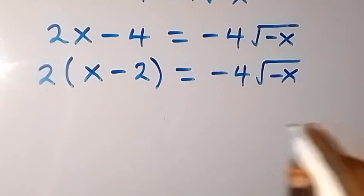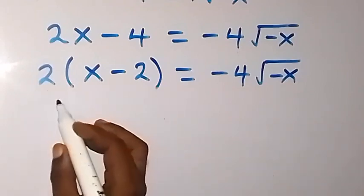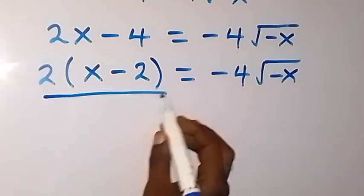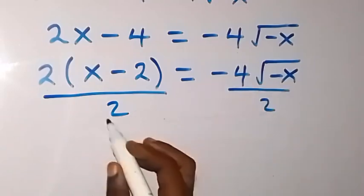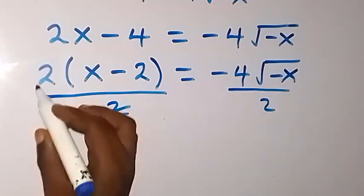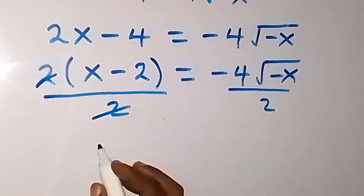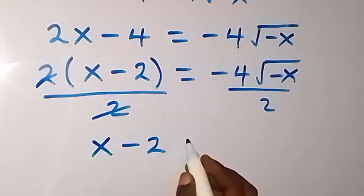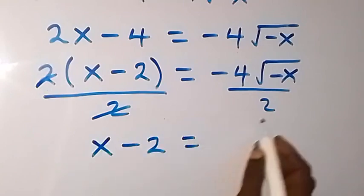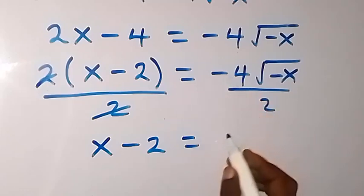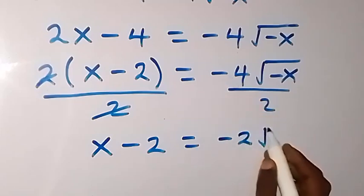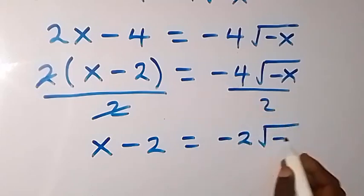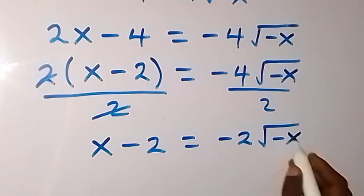In the next step, we divide both sides by 2. The 2 cancels out, and we are left with x minus 2 equals minus 2 root of minus x.